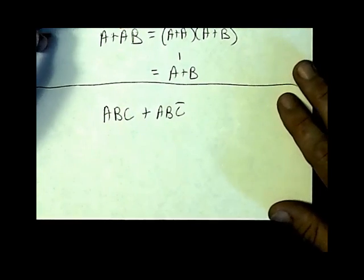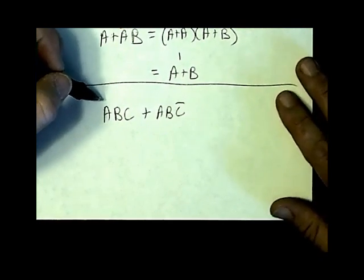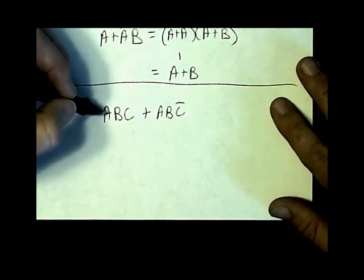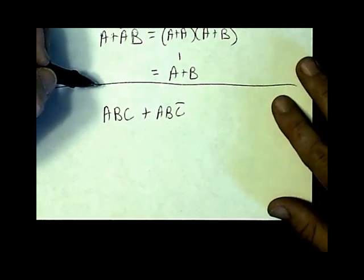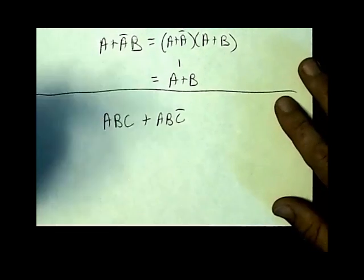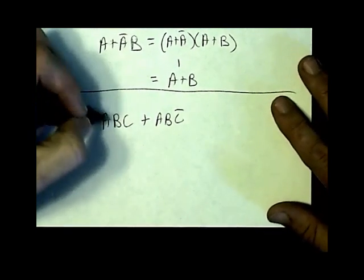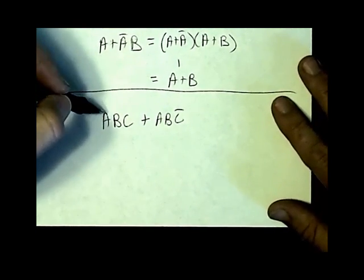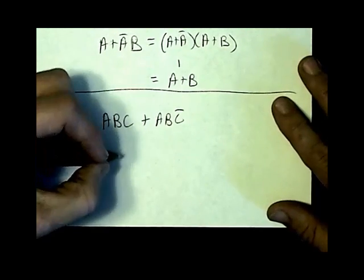Another thing that we need to know how to do in Boolean is what is called factor in regular algebra. I use it as well here. Factor means take out what's in common. First of all, you'll notice I have two letters in common: AB, AB. So I'm going to take that out.